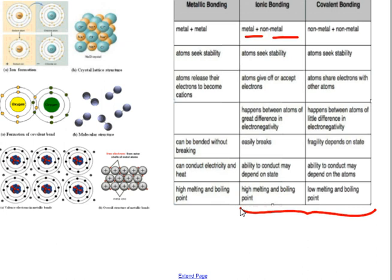In covalent bonding you might remember from grade 10 that this typically happens between two non-metals. Both of the non-metals have similar strengths, similar electronegativities and neither can actually pull the electrons off of the other atom. So their outer shells, their valence shells will overlap and their electrons will share. Covalent bonded compounds are often called molecules.